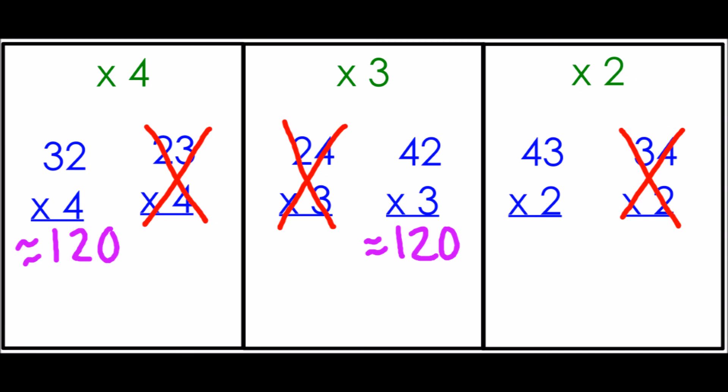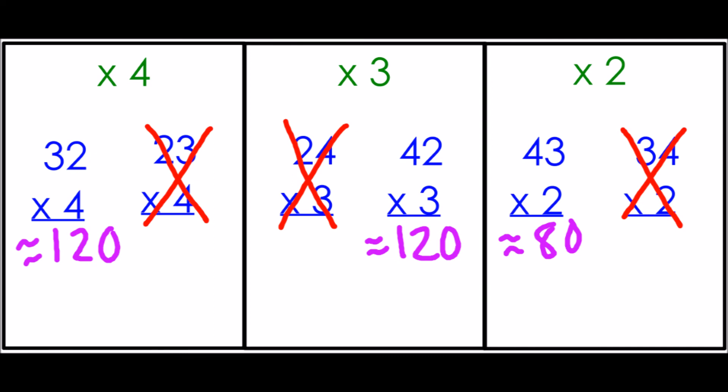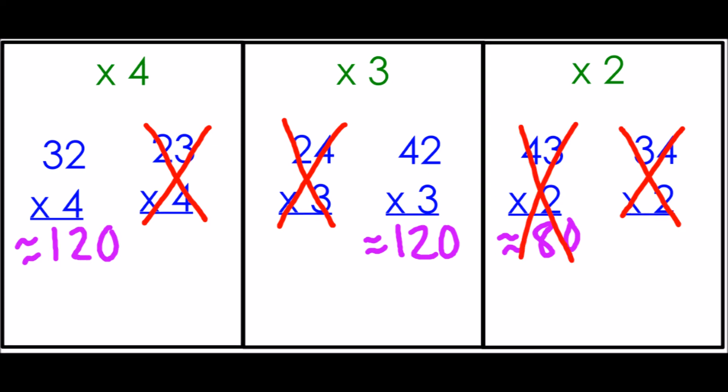And then my last one, 43 times two, 43 rounds to 40, 40 times two is 80. So that estimate is only 80. If I look at my three estimates, 120, 120, 80, I can easily cut out the product that had an estimate of 80. So 43 times two, bye, you're gone. So now I only have two problems left.